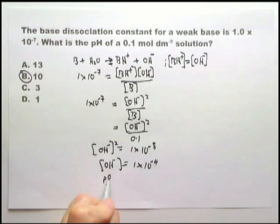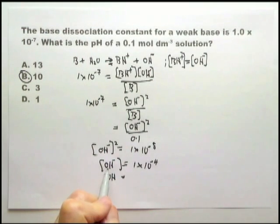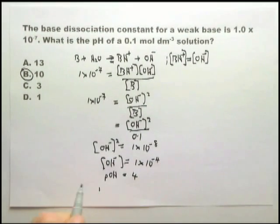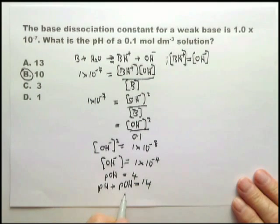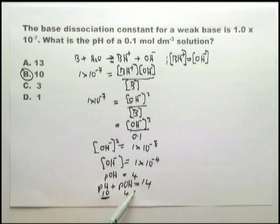Therefore, pOH equals minus the log of OH minus, which equals 4. And since we know that pH plus pOH equals 14, if that is 4, that must be 10. But as I said, it's not necessary to do the calculation. You can work it out from fundamental chemical principles. And it can be done in 10 seconds.